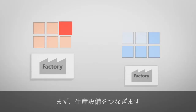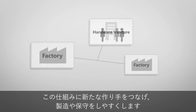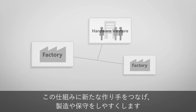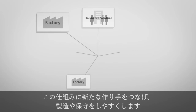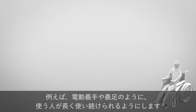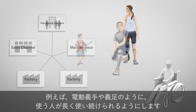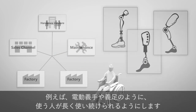To facilitate new manufacturing, we need to connect production facilities together. By doing so, such facilities can respond to unexpected changes in production volume. We will involve hardware ventures in this network. By connecting with facilities and knowledge of production and maintenance, we will make it easy to customize products to users' needs, such as artificial arms and legs. This will create more effective products that can be used for a longer period of time.